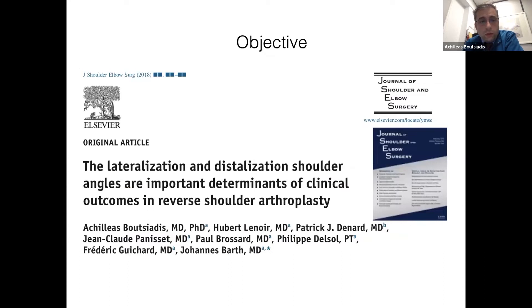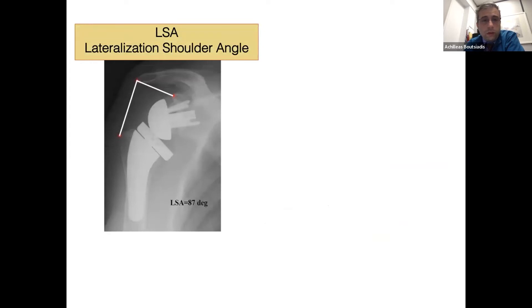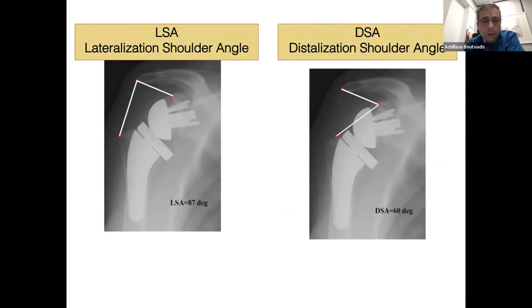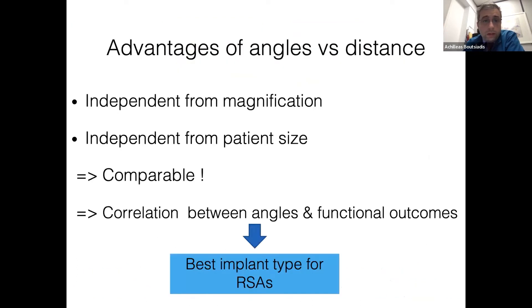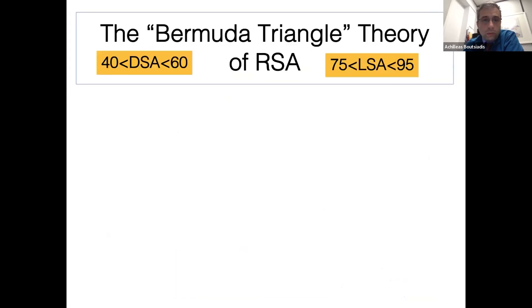Four years ago, we introduced three angles: the LSA and the DSA — the Lateralization Shoulder Angle and the Distalization Shoulder Angle — which can be measured on simple postoperative radiographs. These two angles have very high intra- and inter-observer reliability. They are independent from any magnification and patient size, they are comparable, and they are highly correlated with functional outcome. We found that when the DSA is between 40 and 60 degrees and the LSA is between 75 and 95 degrees, we achieve our best results.